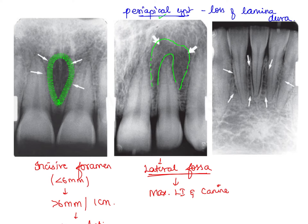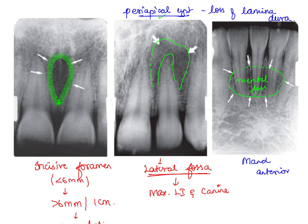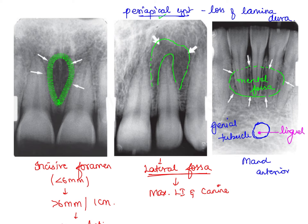Moving on to the third image showing the mandibular anterior region — this is the mandibular anterior IOPA. There is an ill-defined radiolucency, which is the mental fossa. In the same radiograph, we can also find a radio-opaque structure known as the genial tubercle. In the center of the genial tubercle, there is a small radiolucency denoting the lingual foramen.